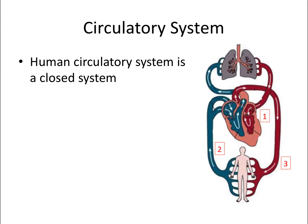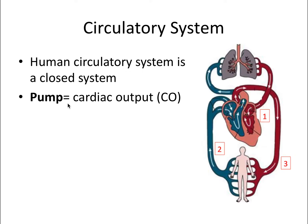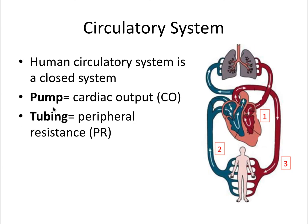Let's talk about the human circulatory system, which is a closed system. Pressure within that system depends on three factors. The first is the pump, or the heart, which is related to cardiac output, determined by the strength and rate of the heartbeat. The second is the tubing, or the blood vessels, and their vascular resistance depends on how dilated or constricted those vessels are. The final component is the fluid, or the blood, which is related to blood volume.